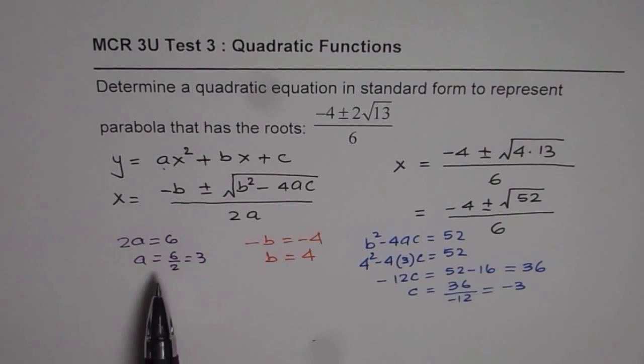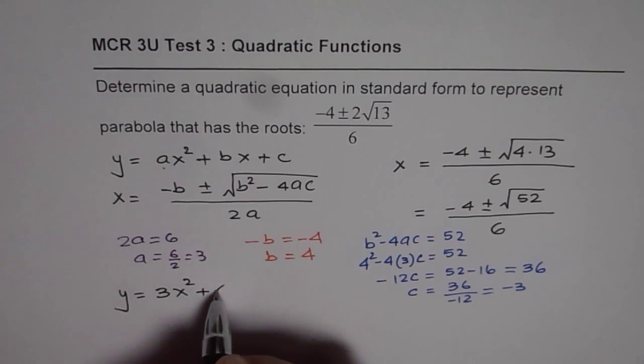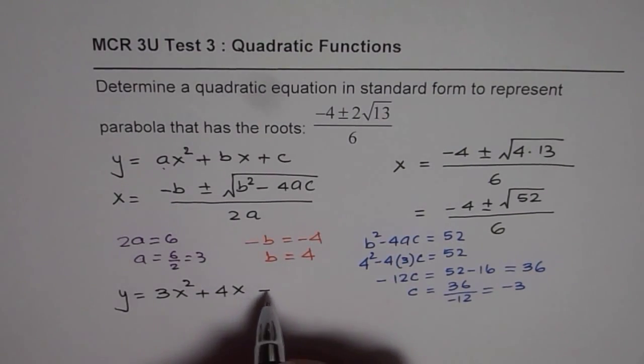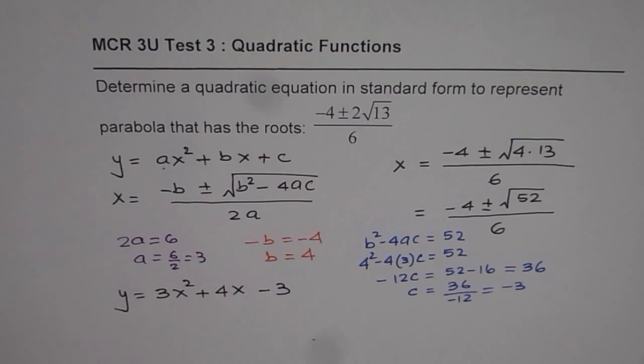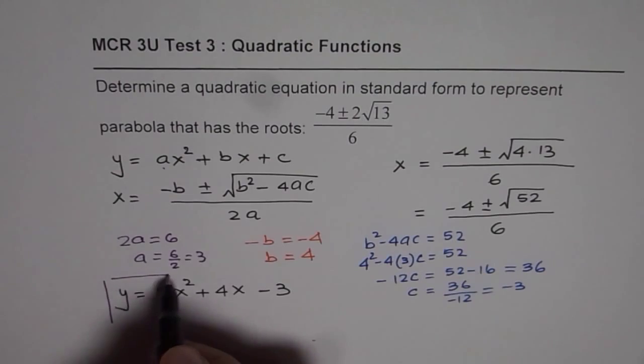Since we know a, b and c we can write down our quadratic function. It should be y equals a is 3, so 3x square, b is 4 plus 4x, c is minus 3, so we will write minus 3. That is how we can get the solution of such a question.